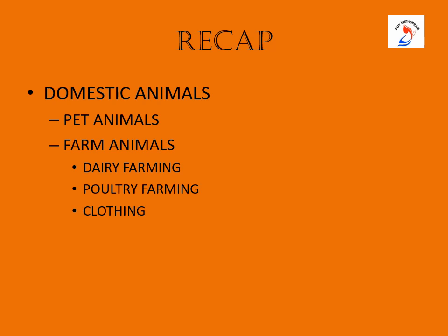We learned about domestic animals. Domestic animals are animals which can live with human beings. Domesticated animals are grouped into two types: pet animals and farm animals. Some animals are kept at home as pets, for example dogs and cats.